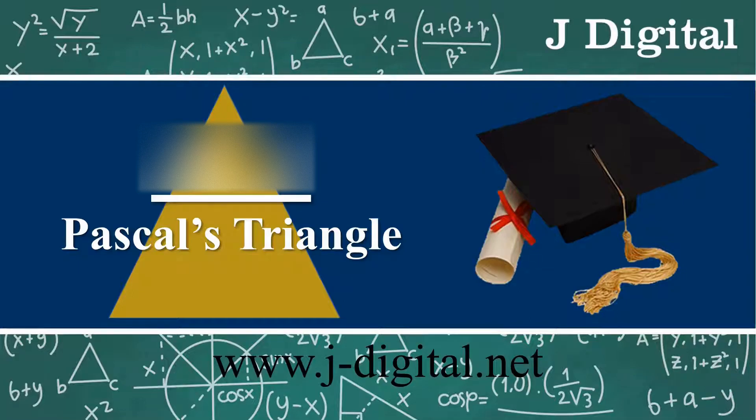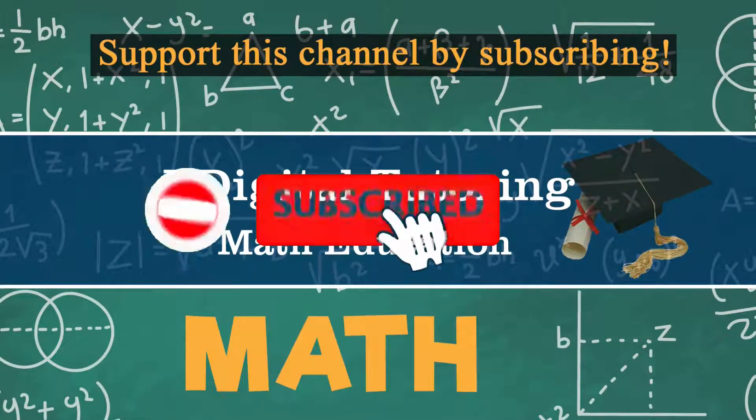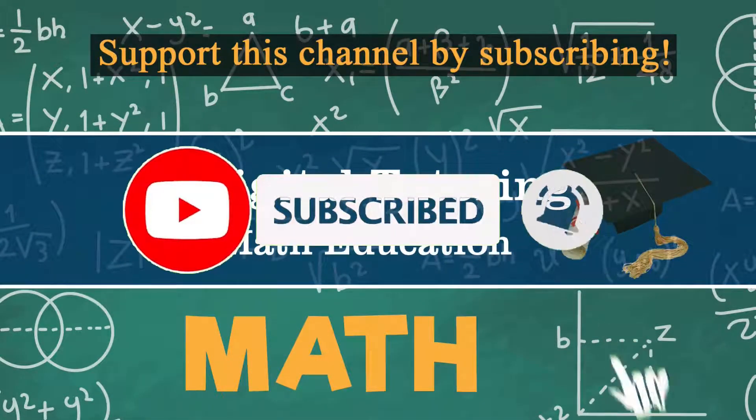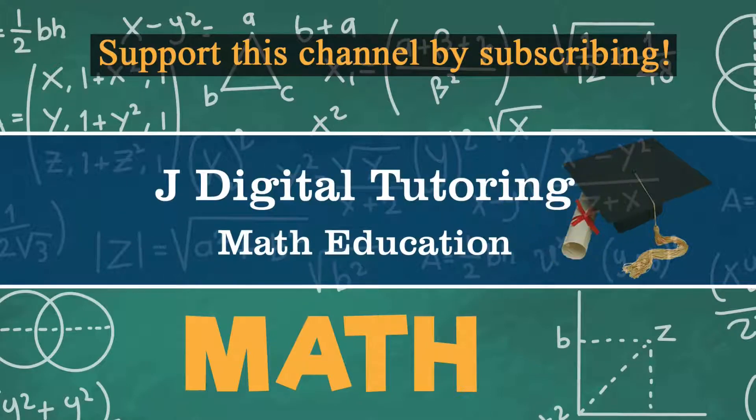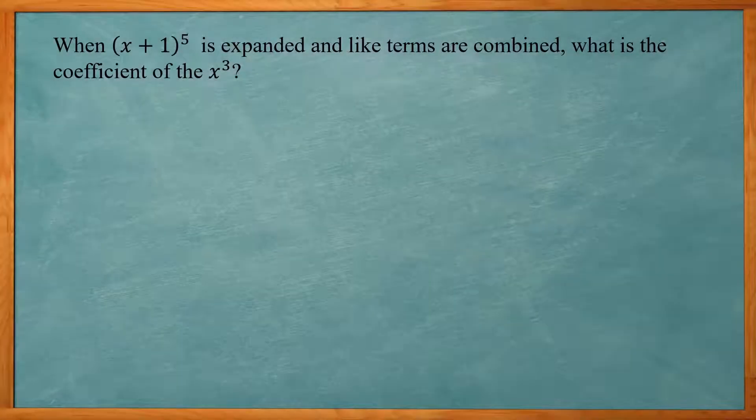In this video I'm going to go through an example ACT problem that involves Pascal's triangle. So this one reads: when x plus 1 to the fifth power is expanded and like terms are combined, what is the coefficient of the x to the third?